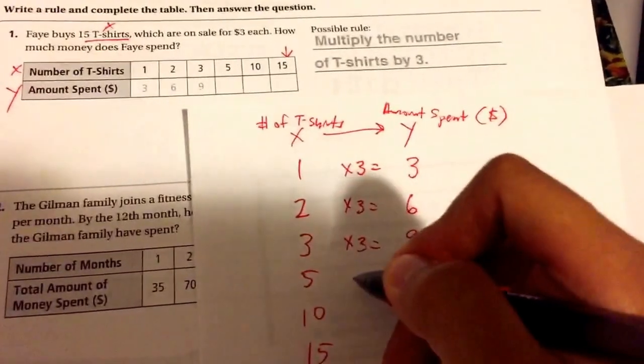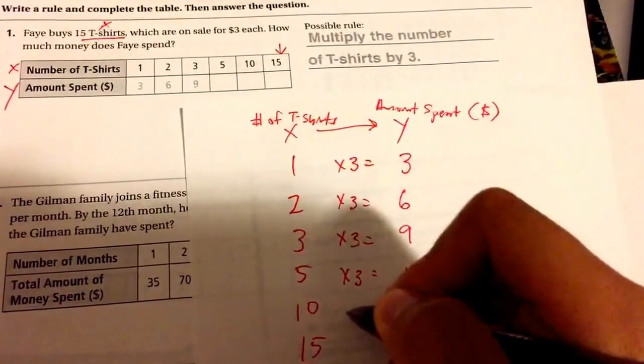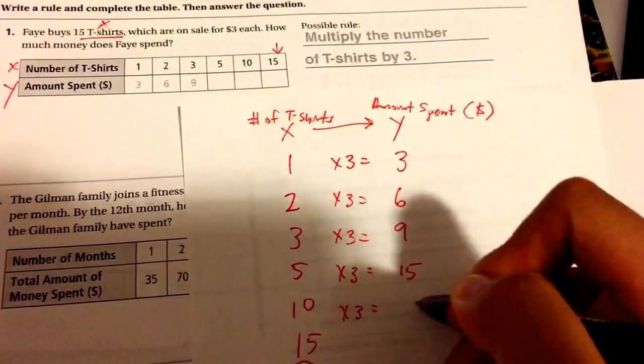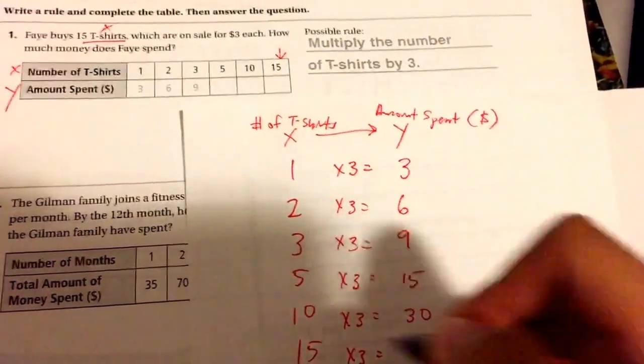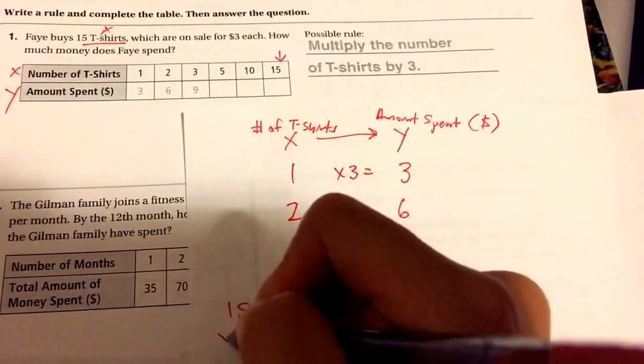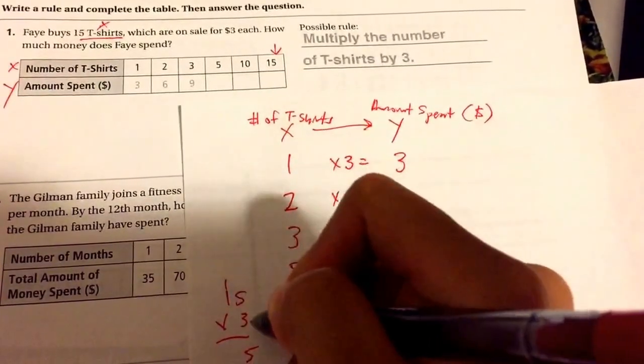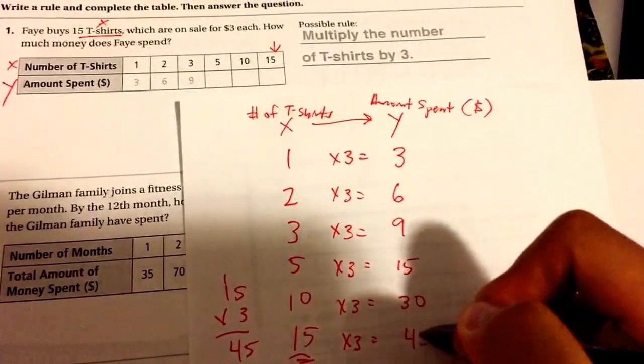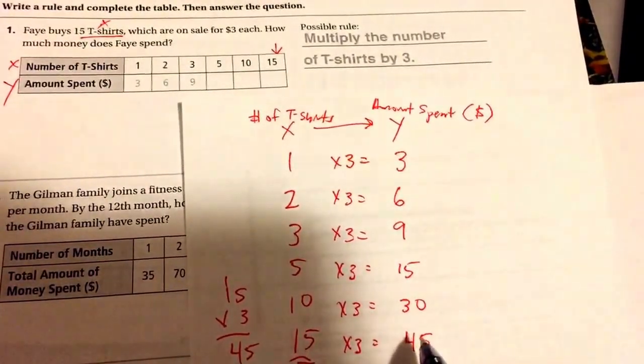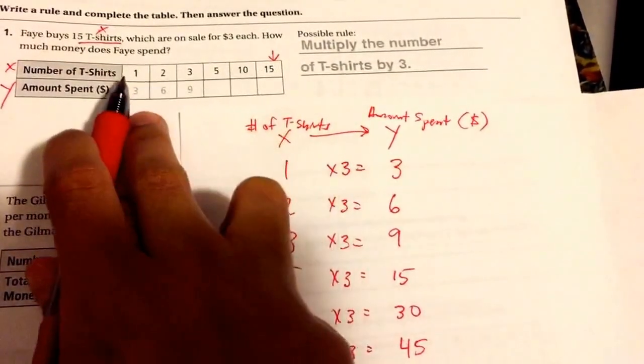Five times three is fifteen, ten times three is thirty, and fifteen times three—if you don't know that, you could do it on the side. Some of you might know that math fact, others of you might have to write it out. There's no shame in writing it out to show your work. Fifteen times three is forty-five. And so you could finish up this chart by going one, three, two, six, three, nine, and from here, five, fifteen, because five times three is fifteen.